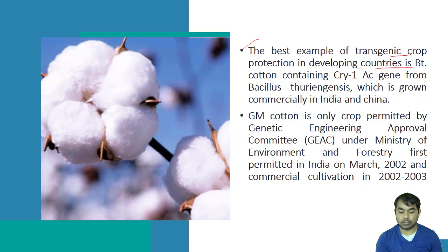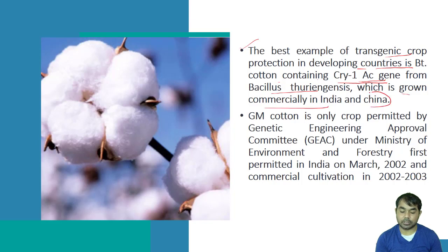The best example of transgenic crop protection in developing countries is BT cotton, which contains the Cry1AC gene — the gene taken from Bacillus thuringiensis. It is grown commercially in India as well as in China. GM cotton is the only crop permitted by the Genetic Engineering Approval Committee under the Ministry of Environment and Forest, permitted in India in March 2002.